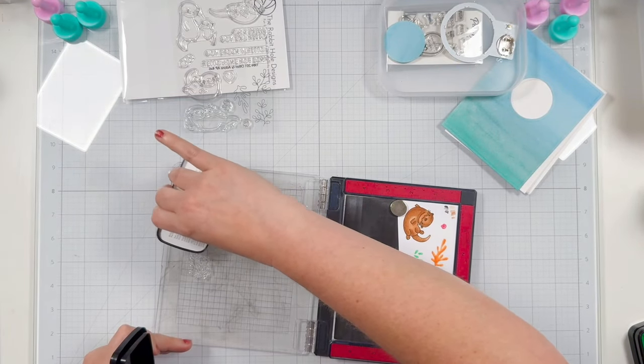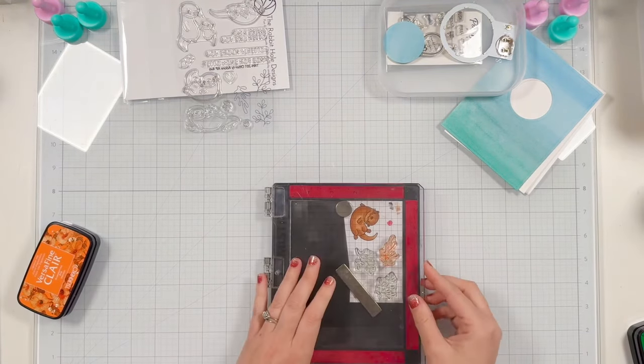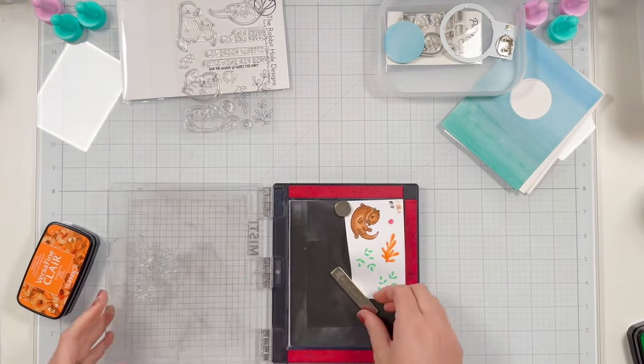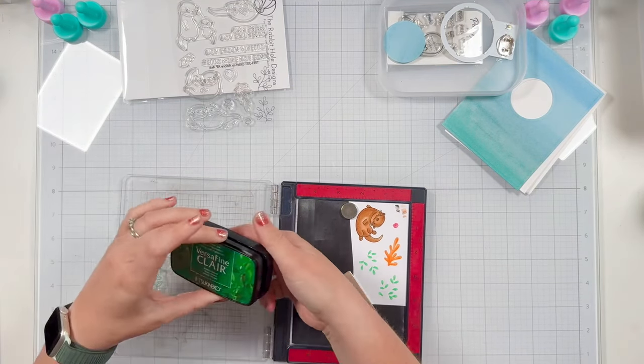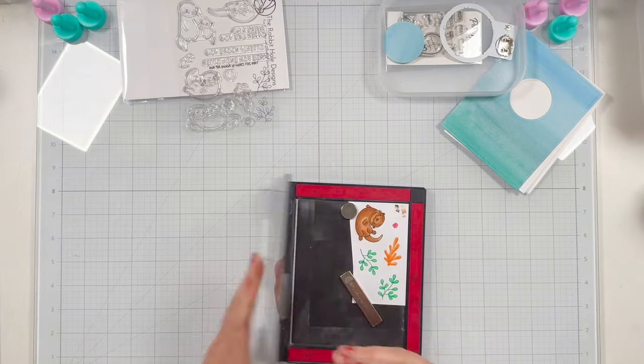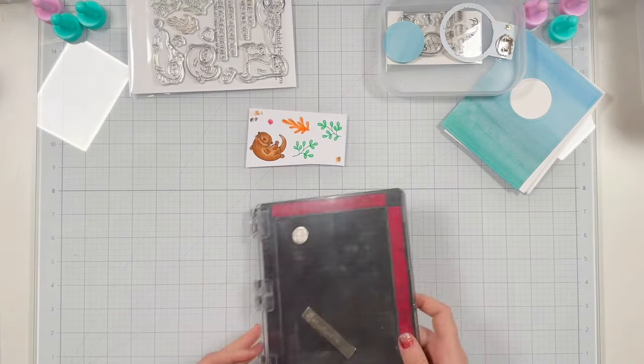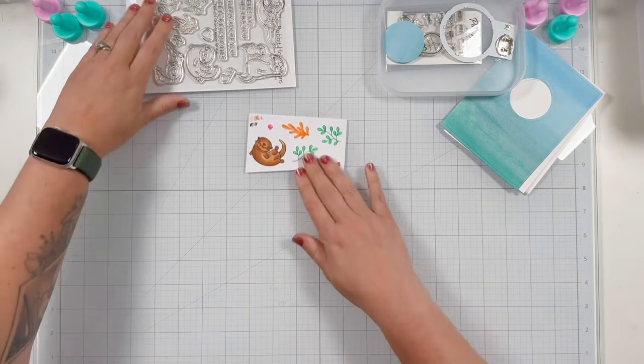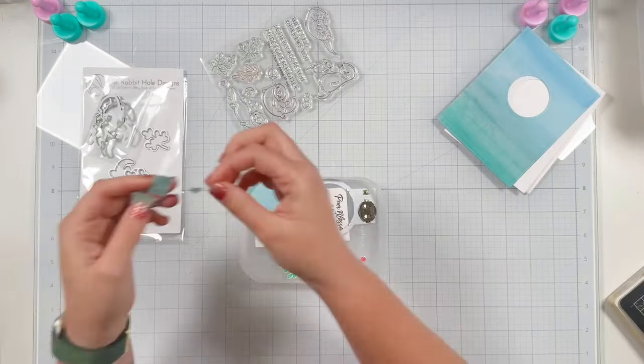And again I don't need to worry about the placement of my stamps because they're still in my Misti from the original stamping with the really pale gray ink. And then finally I'm stamping my two little kind of sea life here in green. And I really like how this turned out. Again just gives them nice bold colorful lines and there is a coordinating die set from Rabbit Hole Designs, the Otterly Adored Dies.